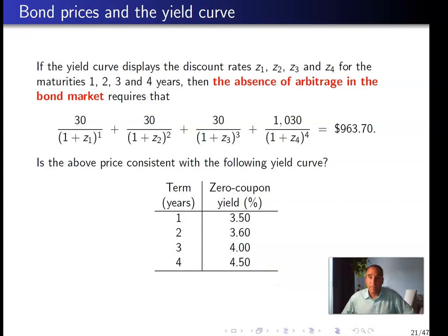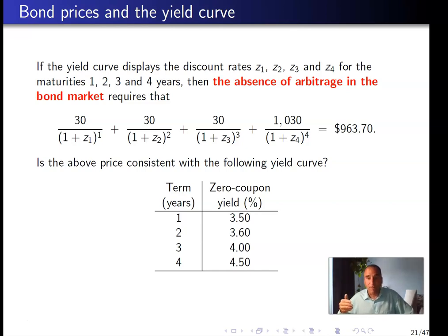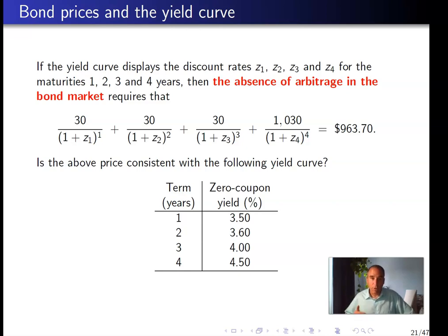We have a bond with a 4-year maturity, a coupon rate of 3%, and a face value of $1,000. A yield to maturity of 4% has been applied, giving a price of $963.70. Is this price consistent with the yield curve? A bond trader sees this price and will compare it to the price obtained when all coupon payments and the face value are discounted using the rates on the yield curve.